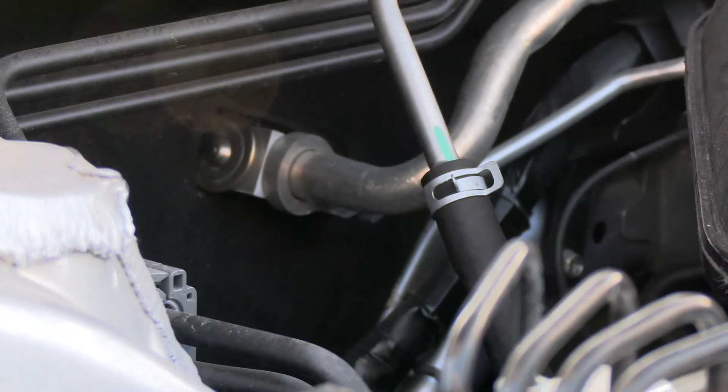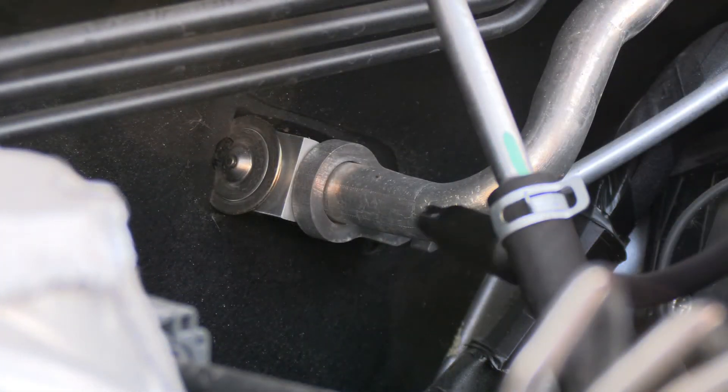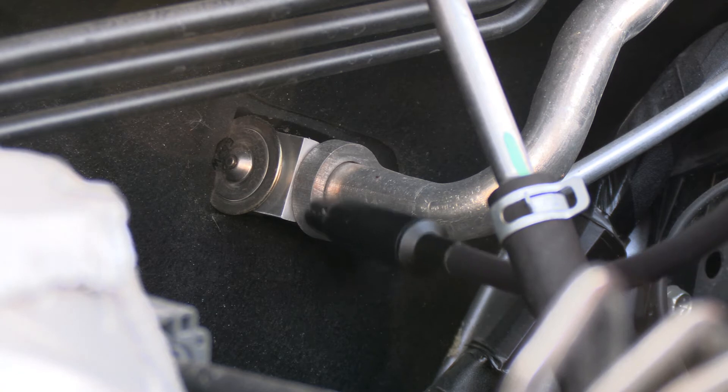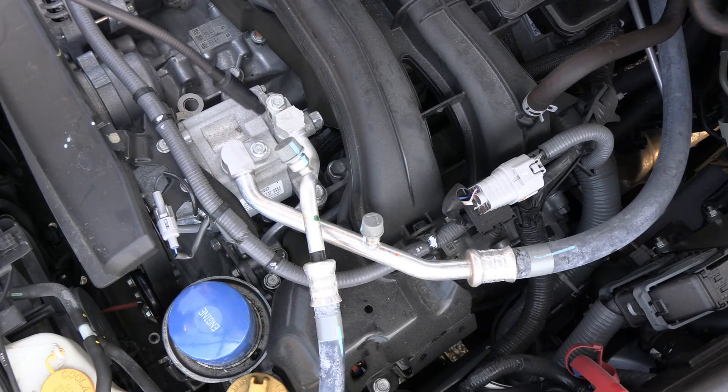Place the tip of AST 200 IR as close as possible to the suspected leak. Be careful not to block the airflow as this can cause false alarms. Slowly move the probe past each possible leak point.